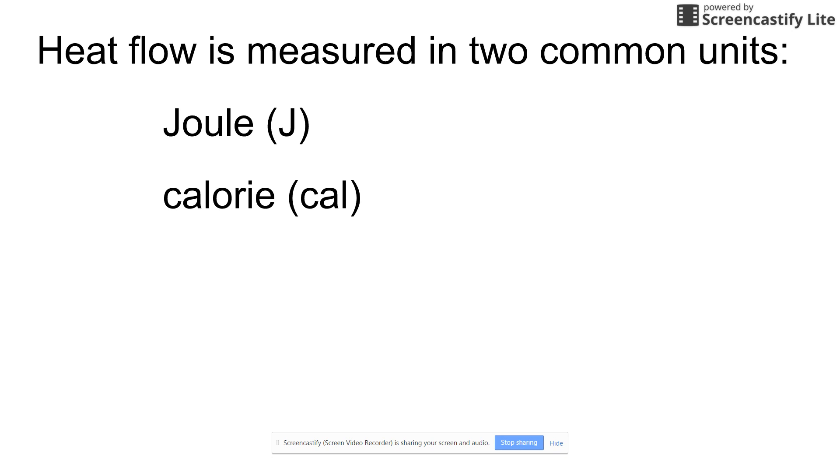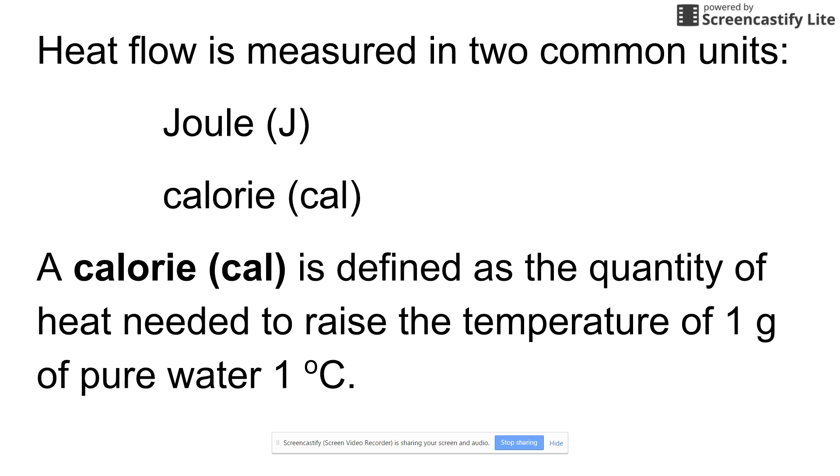But first let's talk about the definition of a calorie, lowercase c-a-l. A calorie is defined as the quantity of heat, so energy, required to change one gram of water one degree Celsius. So if you have one gram of water and that changes one degree Celsius, the heat required to make that temperature change is known as one calorie.